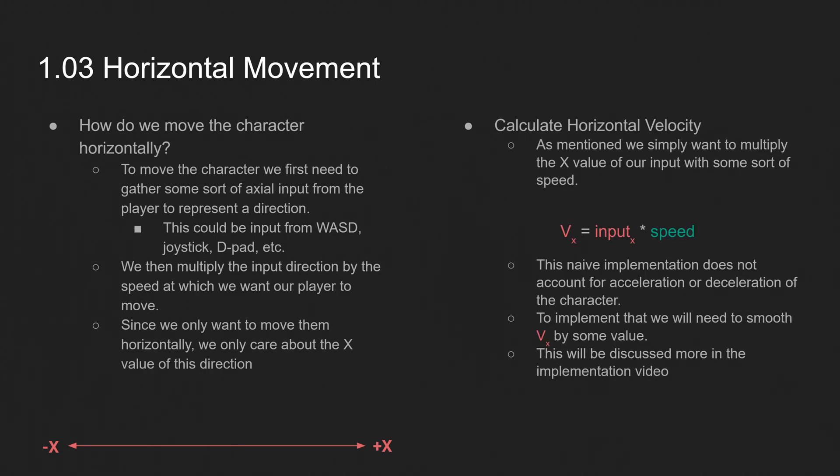So to calculate horizontal velocity, we simply want to multiply the x value of our input with some sort of speed. So if we look at the equation, again, super simple. The x velocity is equal to the input_x times whatever speed it is that we want. Now, this is a pretty naive implementation. It doesn't account for acceleration or deceleration of the character. So to implement that, we will need to smooth it by some value. And we'll discuss that more as we actually implement it in the video regarding that 1.03.